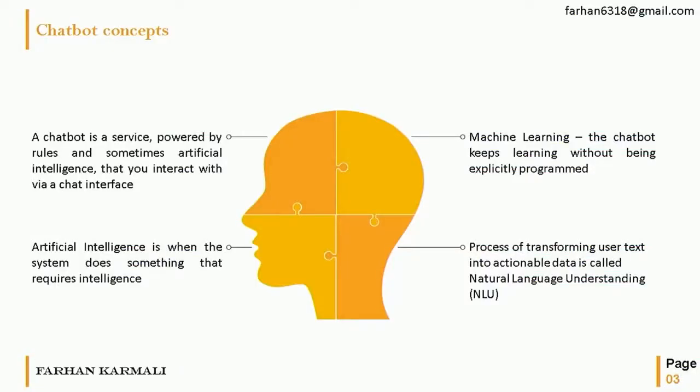These are some chatbot concepts. I'm sure we all know what a chatbot is, so we'll skip that. Some concepts to get familiar with: machine learning — the system has data and can learn and evolve on its own from that data. Then there's artificial intelligence — a system that does something that normally requires human intelligence, such as predicting the next course or recommending the next module. And the process of transforming user text or speech into actionable data is called natural language understanding, NLU.